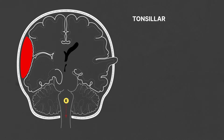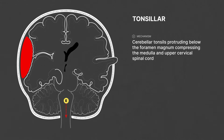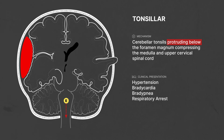Tonsillar herniations are when the cerebellar tonsils protrude below the foramen magnum, compressing the medulla and upper cervical spinal cord, leading to hypertension, bradycardia, bradypnea, and respiratory arrest — a constellation of symptoms we often refer to as a Cushing reflex.